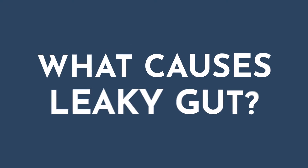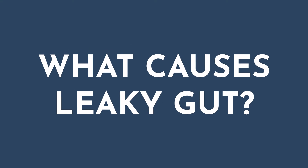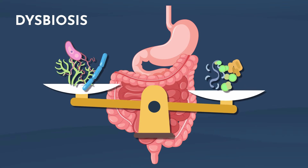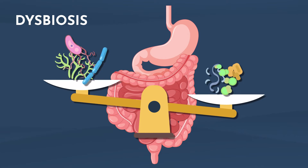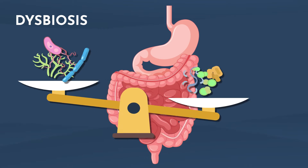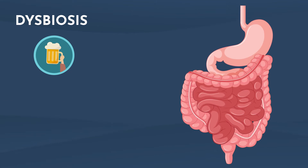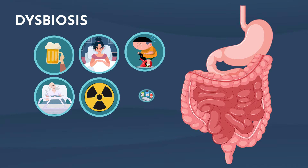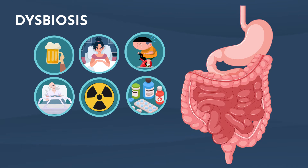So what are some of the underlying causes of leaky gut? One of the big ones is dysbiosis — any type of imbalance of bacteria can be linked to leaky gut. There are also things like alcohol use, poor sleep, over-exercise, chemotherapy and radiation, NSAIDs and other medications, as well as, of course, a poor diet, especially the standard American diet.